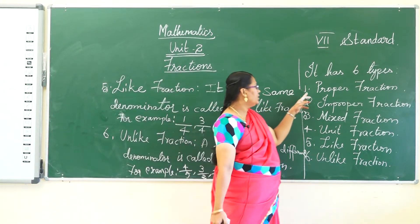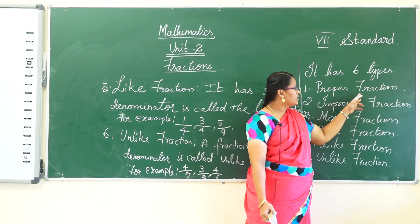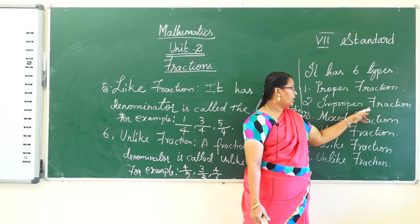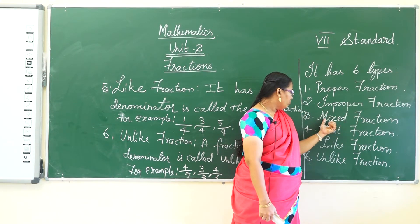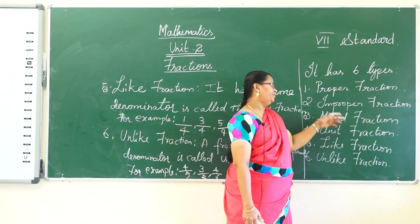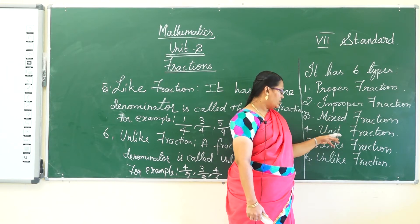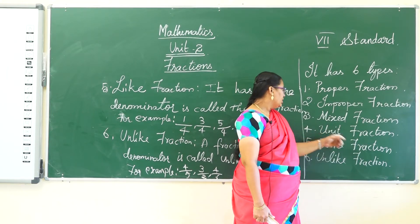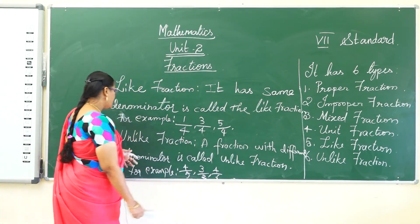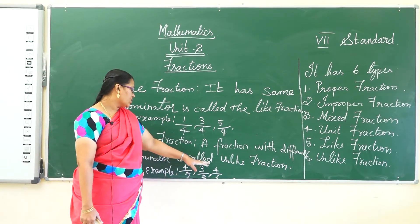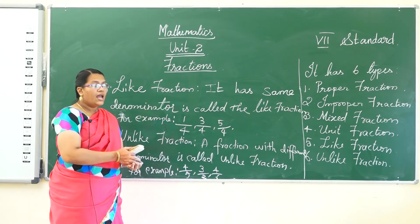Just to go through all the types: proper fraction — numerator is less than the denominator; improper fraction — the numerator is greater than the denominator; mixed fraction — whole number with a proper fraction; unit fraction — numerator value is 1; like fraction — same denominator; unlike fraction — different denominator. I hope you all understand the types of fractions. Now see the revision exercise.